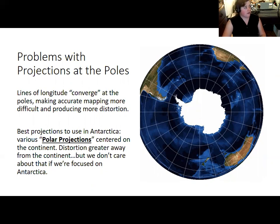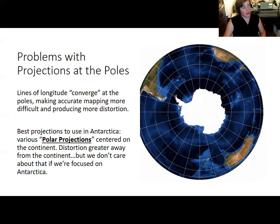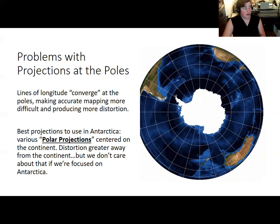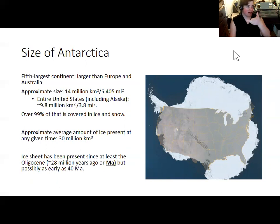A South Pole-centered projection means Antarctica looks fine, while lands closer to the equator get a bit more distorted — but for a map focused on Antarctica, that doesn't matter much. Often you'll see a map with an equatorial projection for most of the world and a small inset with a polar projection of Antarctica and the Arctic Ocean. With better mapmaking we've determined that Antarctica is the fifth-largest continent — larger than Europe, larger than Australia, and larger than the entire United States even including Alaska.